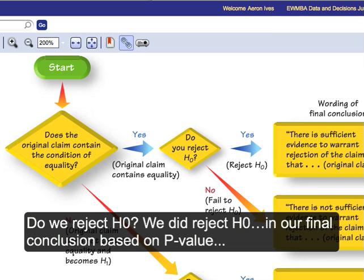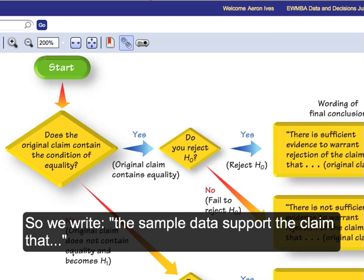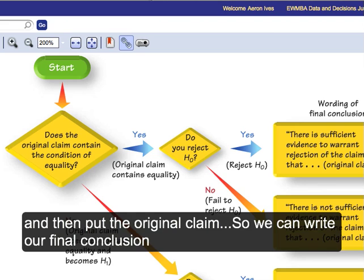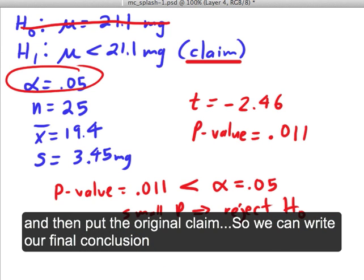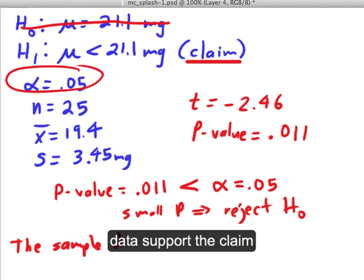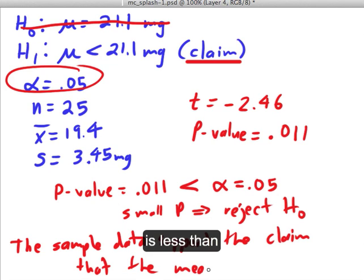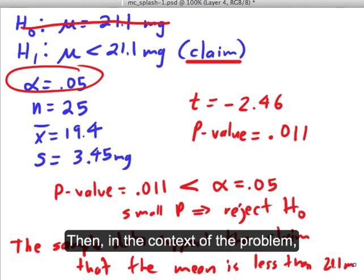Do we reject H0? In our final conclusion, based on the p-value, we did reject H0. So yes, we reject H0, and then here's what you write. The sample data support the claim that, and then you put the original claim. So we can write our final conclusion as the sample data support the claim that the mean is less than 21.1 milligrams.